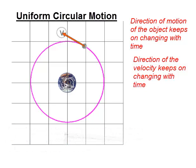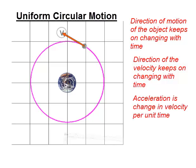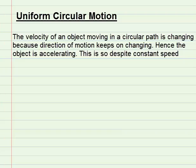Acceleration is change in velocity per unit time. Since the velocity of an object moving in a circular path is changing — because its direction of travel is continuously changing — the object must be accelerating. This is despite the fact that its speed is uniform.